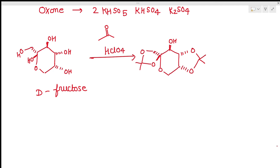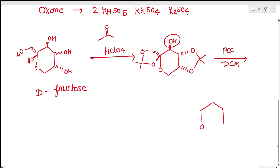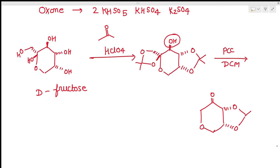In the next step, the remaining OH group is oxidized using PCC (pyridinium chlorochromate). As a result, you get the ketone product with the two ketal groups intact. This final structure — with a keto group flanked by two ketal groups — is our Shi catalyst.